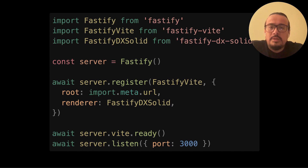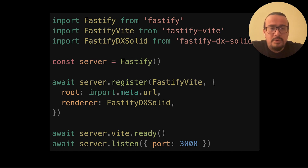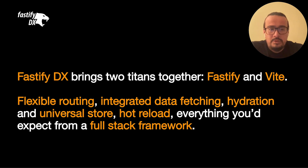That's all you need. Start your Fastify server, register Fastify Vite, wait for Vite to be ready — in which case it's harmless running in production, this only affects development mode — and you have a single server.js file controlling your application and everything a fullstack framework would offer. Fastify DX brings two titans together: Fastify and Vite. You have flexible routing, integrated data fetching, hydration, and a universal store, hot reload, everything you would expect from a fullstack framework.